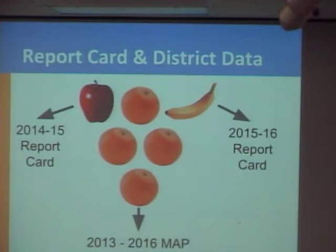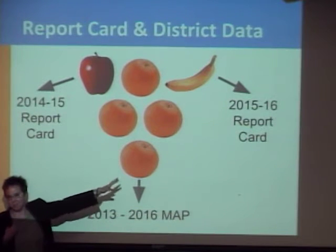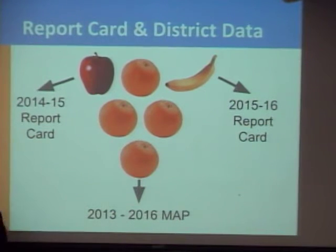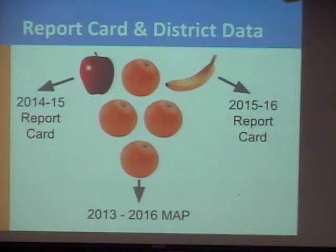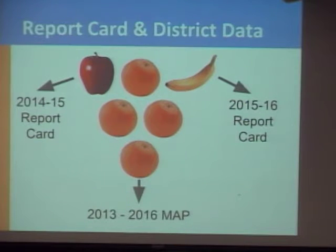What we do have is our own district measure, which is a national assessment called MAP. We actually have four years of data that we can look at to see whether we're making a difference. We picked a national assessment because the state is rather unpredictable on how they change tests and measures, and we didn't want to just look at how we're doing in Ohio — we wanted a national snapshot to see how our students compare across the country.